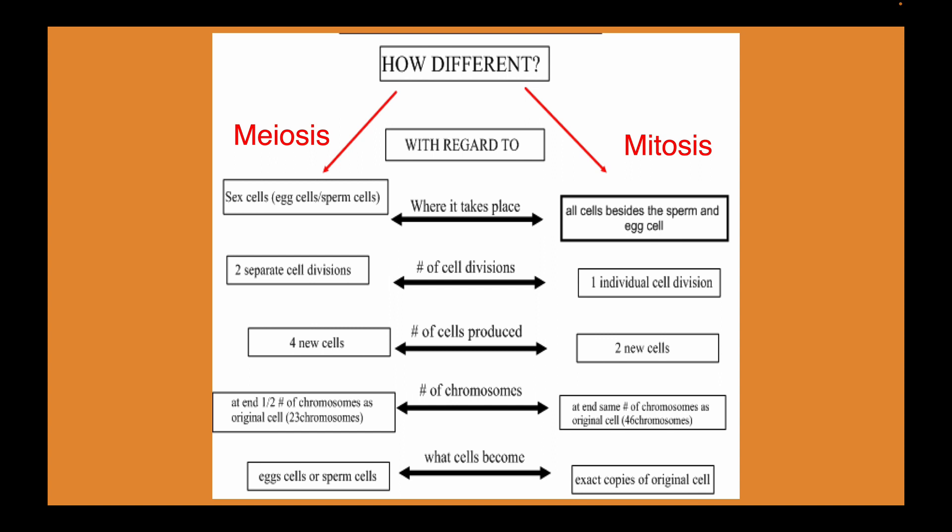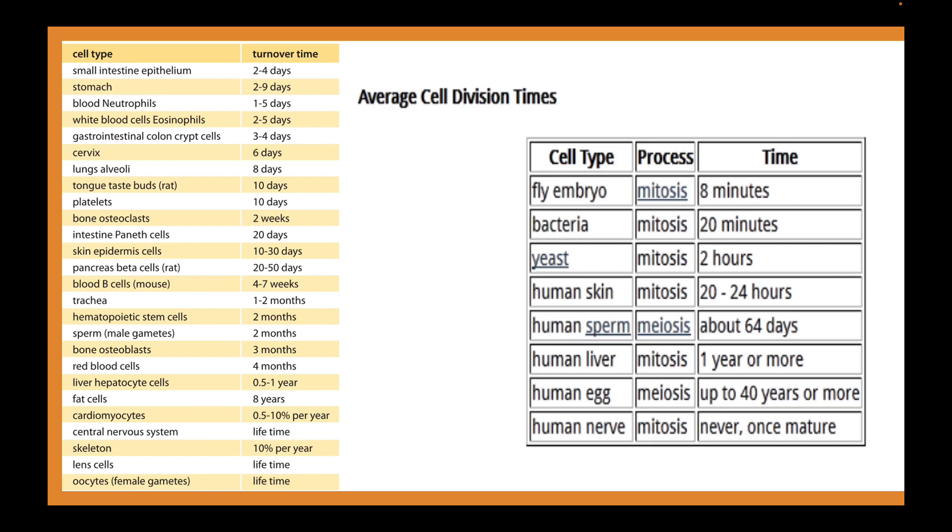In terms of number of divisions, meiosis has two separate divisions while mitosis has only one. Meiosis produces four new cells; mitosis produces only two. At the end of meiosis, cells have half the number of chromosomes — which is why they're haploid — but in mitosis the cells end up with the same chromosome number as the original cell, so they're diploid. Cells become gametes through meiosis, but in mitosis they become whatever the original cell was — a liver cell becomes a liver cell, a bone cell becomes a bone cell.